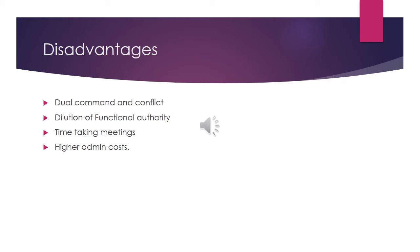As far as disadvantages are concerned, dual reporting will lead to conflict and difficulty in lines of control, as a team member will be answerable to both the production manager and the functional head, leading to dilution of functional authority. These conflicts will require time-consuming meetings to be resolved, which in turn will result in higher administrative costs.